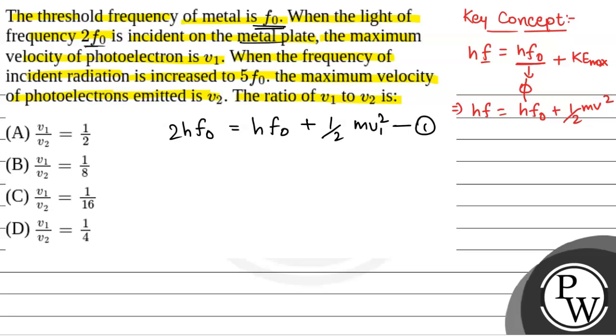And the second equation will be 5hf0, because in this case the incident radiation has frequency of 5f0. That will be hf0 plus half m v2 squared. This will be equation 2.